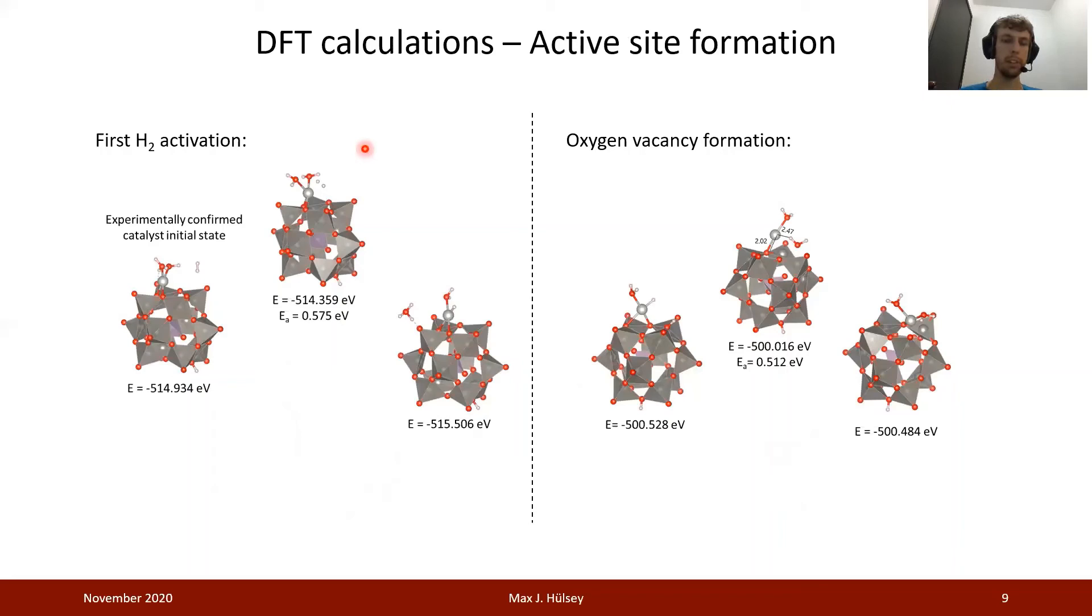We have done DFT calculations to figure out the reaction mechanism. The first thing we started with is the experimentally confirmed initial catalyst state, containing palladium bound to two oxygen atoms to the polyoxometalate and two water molecules. This can do the first hydrogen activation by removing one of the water molecules as H3O+, which will then probably be joining the solvent molecules and a palladium hydride species here. After the formation of this hydride species, we can then remove one of the oxygen atoms from the support and form an oxygen vacancy. Overall, this process is downhill and we observe moderate reaction barriers.